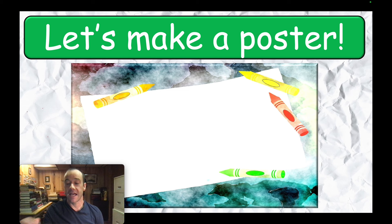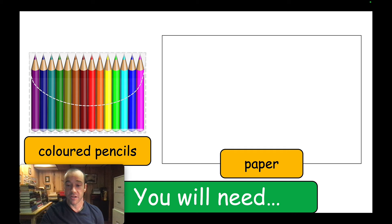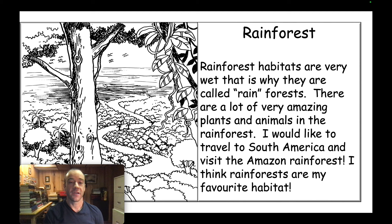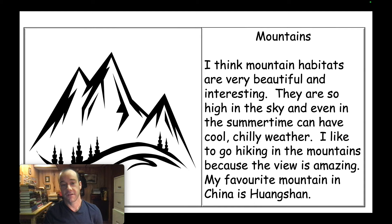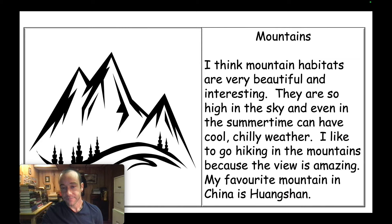At the end, there's a poster-making activity — they'll need paper and colored pencils. Here's an example: they can write about a rainforest and draw a little picture. For example: 'Rainforest habitats are very wet. That is why they're called rainforests. There are a lot of very amazing plants and animals in the rainforest. I would like to travel to South America and visit the Amazon rainforests. I think rainforests are my favorite habitat.' You can go around and help them with extra words they don't know. The idea is to get them to try — it won't be perfect, but let them draw, write, and continue to think about habitats. That's the end of lesson one.